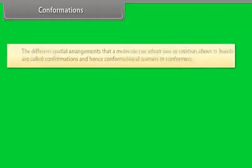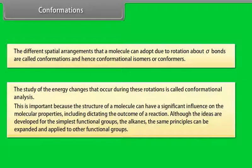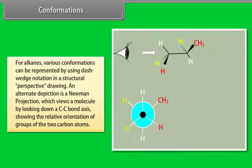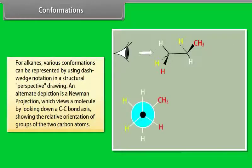Conformations: The different spatial arrangements that a molecule can adopt due to rotation about sigma bonds are called conformations, and hence conformational isomers or conformers. The study of the energy changes that occur during these rotations is called conformational analysis. This is important because the structure of a molecule can have a significant influence on the molecular properties, including dictating the outcome of a reaction. Although the ideas are developed for the simplest functional groups, the alkanes, the same principle can be expanded and applied to other functional groups. For alkanes, various conformations can be represented by using dash-wedge notation in a structural perspective drawing. An alternate depiction is a Newman projection, which views a molecule by looking down at C-C bond axis showing the relative orientation of groups of the two carbon atoms.